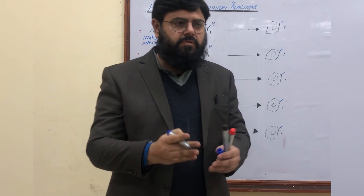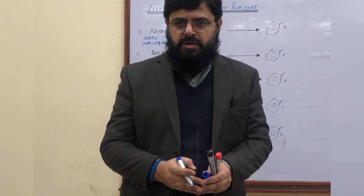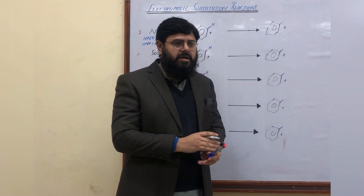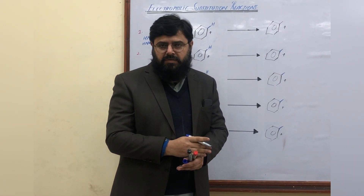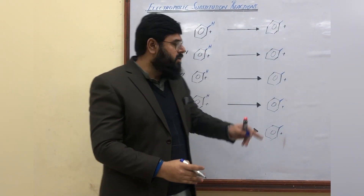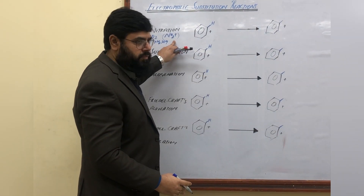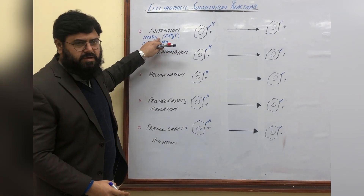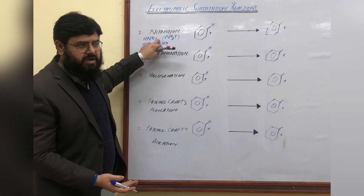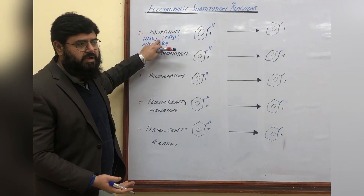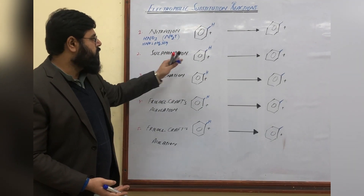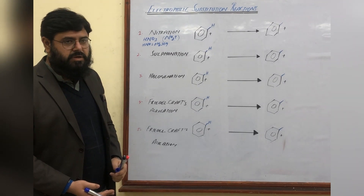In the first case, two molecules of nitric acid react with each other to produce a nitronium ion. In the second case, nitric acid acts as a base and sulfuric acid acts as an acid. In the first case, the rate of reaction will be slow because one molecule of nitric acid acts as a base and the second acts as an acid. This mixture is also known as fuming nitric acid.